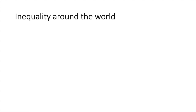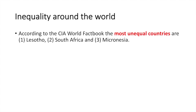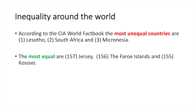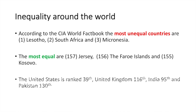According to the CIA World Factbook, the most unequal countries are Lesotho, South Africa, and Micronesia. The most equal are Jersey, the Faroe Islands, and Kosovo. The United States is ranked 39th, the United Kingdom 116th, India 95th, and Pakistan 130th.